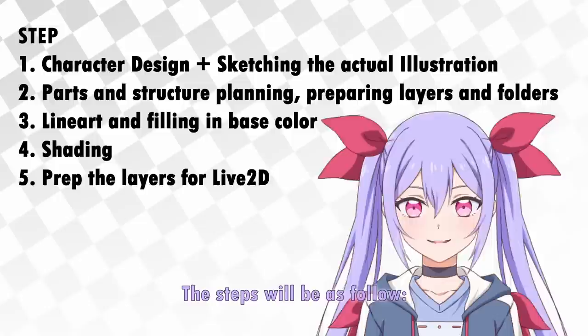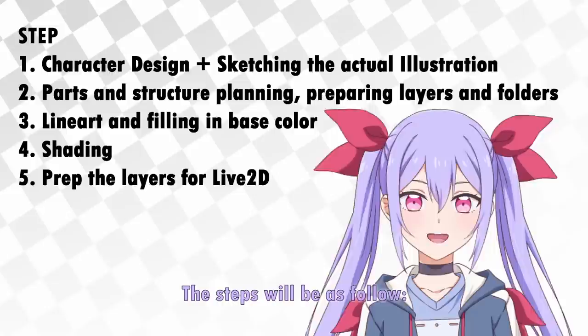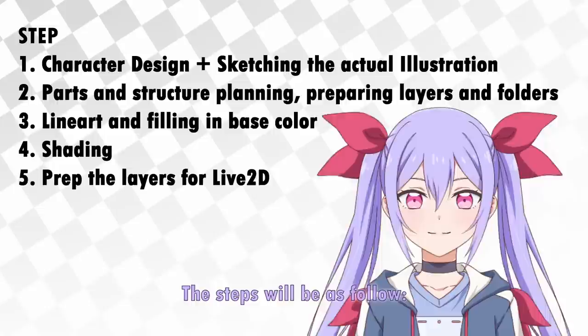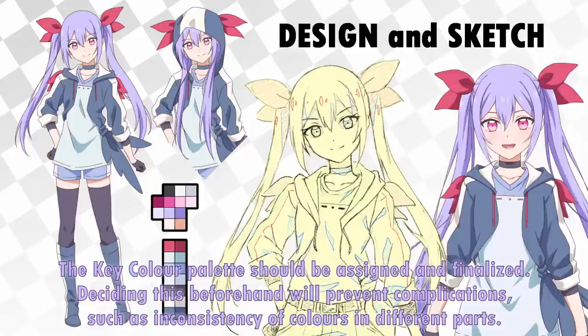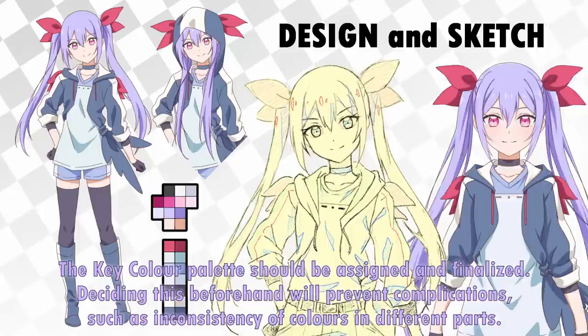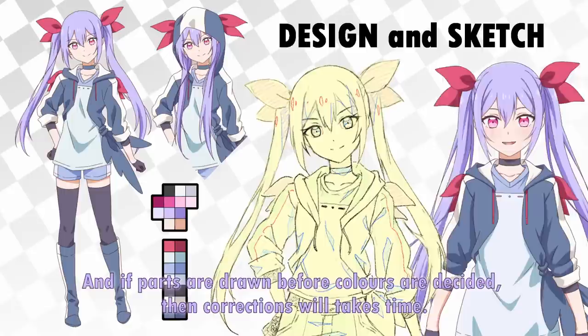The steps will be as follows: 1. Character design and sketching the actual illustration. 2. Parts and structure planning, preparing layers and folders. 3. Line art and filling in base color. 4. Shading. 5. Prep the layers for Live2D. When designing a character, what's important is the preferences of the designer. The key color palette should be assigned and finalized. Deciding this beforehand will prevent complications such as inconsistency of colors in different parts.